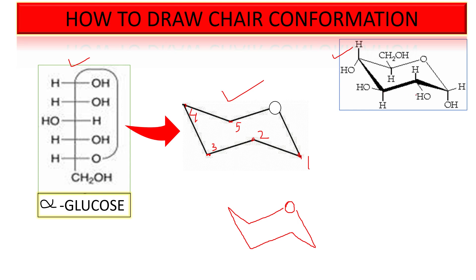Now we have to know how to draw the perpendicular lines that are present on every carbon. For carbon number one, the perpendicular line will always go downwards. Then for all the other carbons they alternate in opposite directions — so the second carbon goes upwards, third carbon downwards, fourth carbon upwards, and fifth carbon downwards. These perpendicular lines are called the axial positions.